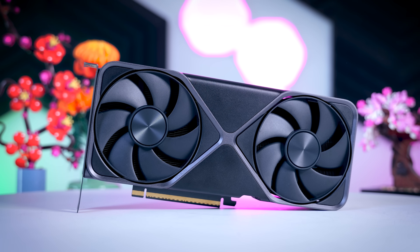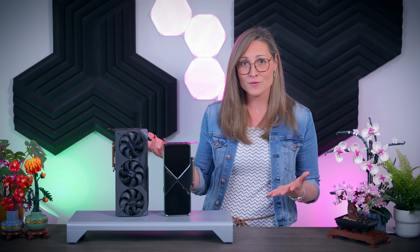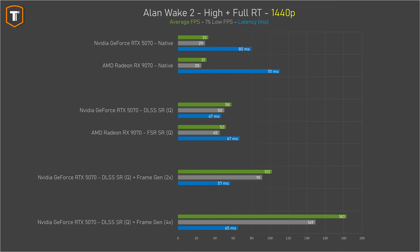AMD is definitely struggling with fully ray traced or path traced games. While these games can look incredible with the right GPU, they are pretty much unplayable on AMD hardware, and the experience is not great on the RTX 5070 either. The 5070 does support multi-frame generation, but if you can't get a playable baseline with upscaling alone, frame generation won't fix things. In Cyberpunk 2077, for example, a 45 fps average from upscaling means it still won't be smooth with frame generation, despite the headline 149 fps figure. Alan Wake 2 is slightly better but still not nearly as enjoyable as playing at regular high settings.